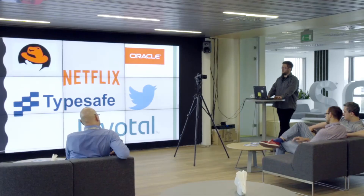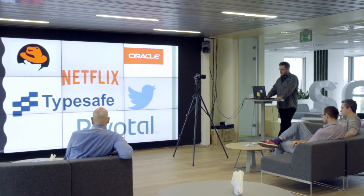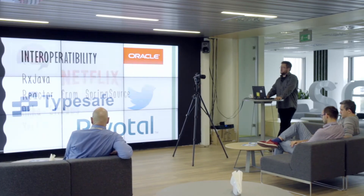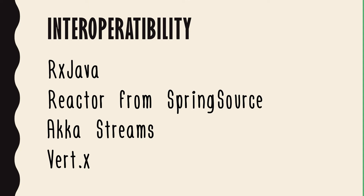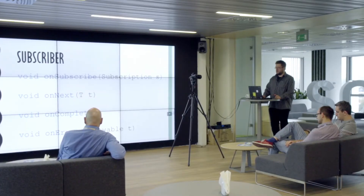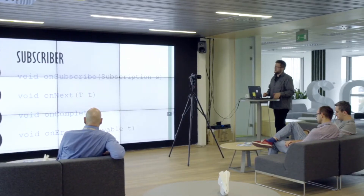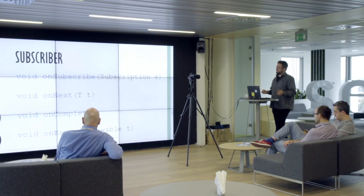This standard is proposed by many different popular companies, and the reason for it is to make interoperability between different popular Java and JVM libraries. It contains a minimal amount of interfaces needed — there are four of them.